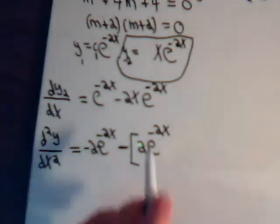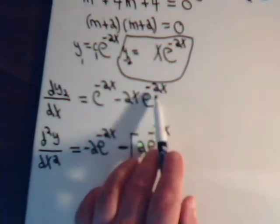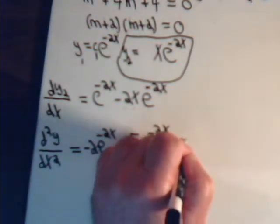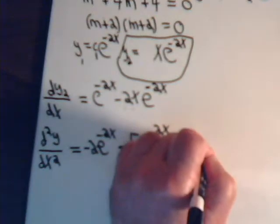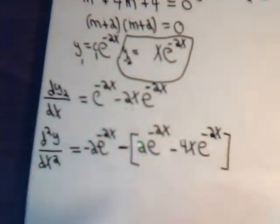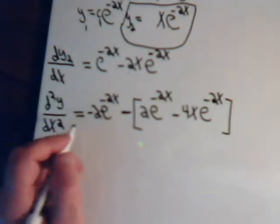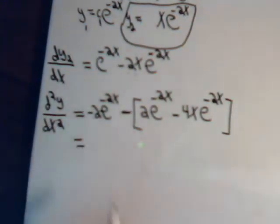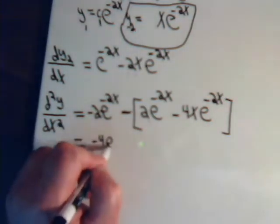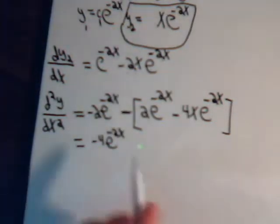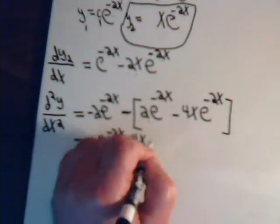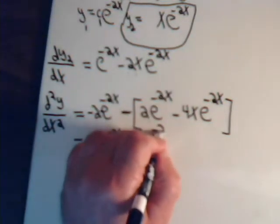And now we're going to have this times the derivative of this, so the 2 comes down, so that will be minus 4x e to the minus 2x. So this equals minus 4 e to the minus 2x, and then we have plus 4x e to the minus 2x.